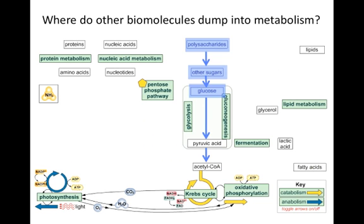Hopefully it is clear now how glucose is a major player in the metabolic process. But where do the other macromolecules we eat, such as fats and proteins, dump into the metabolic cycle? Fats, or lipids, get broken down into glycerol, a 3-carbon molecule, and fatty acids, which are further broken down into 2-carbon molecules. Glycerol dumps in at the same place as pyruvate, as both contain 3 carbons. Hydrolyzed fatty acids dump in at the same place as acetyl-CoA, as both contain 2 carbons.